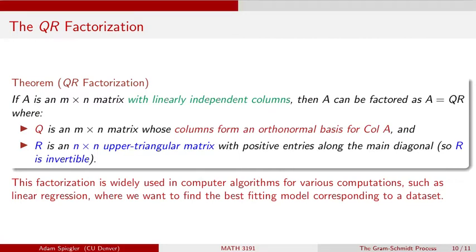If you were given a matrix A, how would you go through the steps to find the matrices Q and R, so that when we multiply those two matrices back together, we get the matrix A that we started with? I'm going to outline those steps on the next slide.